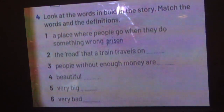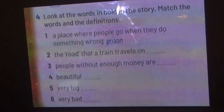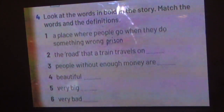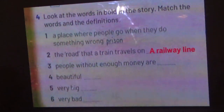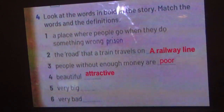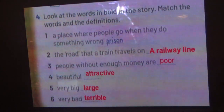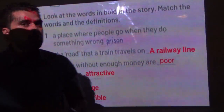Now look at the highlighted words in the story — attractive, present — and match the words with their definitions. A place where people go when they do something wrong — prison. The route that the train travels on — railway line. People without enough money — poor. Beautiful — attractive. Very big — large. Very bad — terrible. We have now finished the first part of our unit. See you soon, thank you, goodbye.